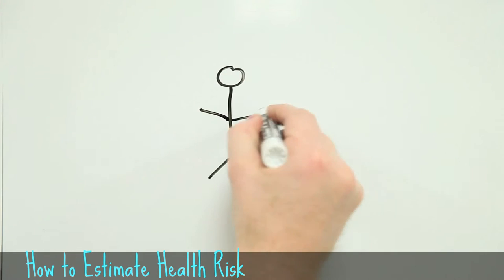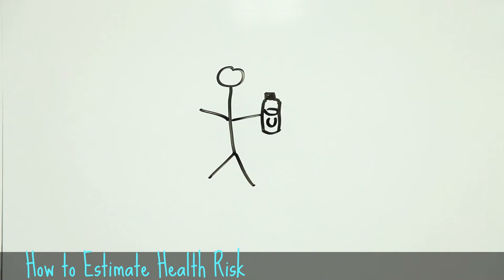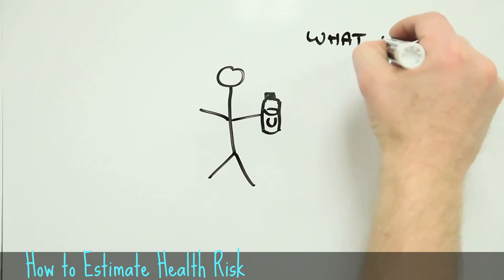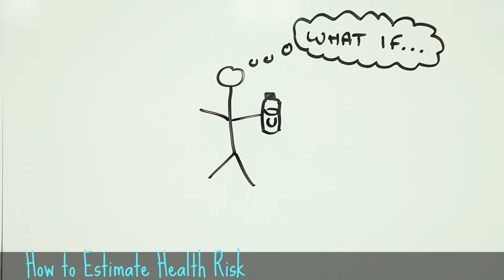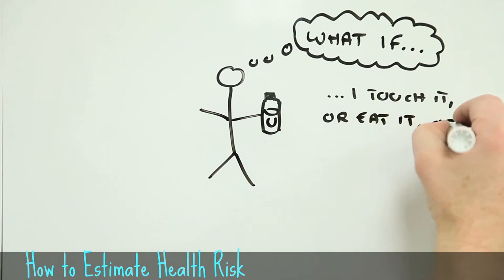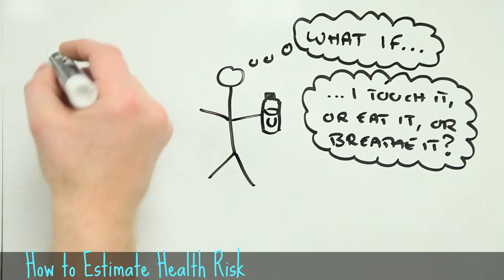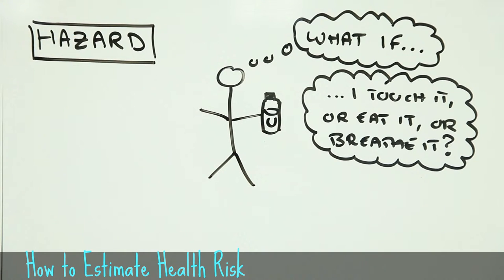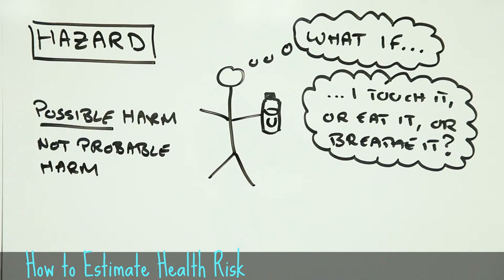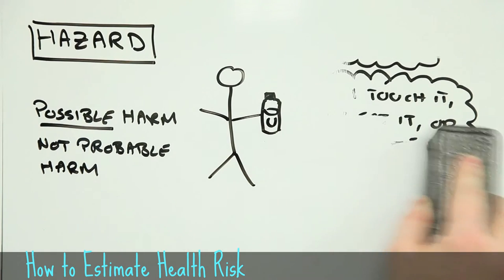Imagine, for instance, you're handling some mystery substance — let's call it Unobtanium. How would you go about working out what the risk is? The first step is to consider the potential for this Unobtanium to cause harm if it got into your body, and what harm it might cause once it gets there. This is the hazard it presents — it gives an idea of how nasty the stuff is if you come into contact with it. But hazard alone doesn't say anything about risk. It doesn't matter how hazardous the Unobtanium is: if you're not exposed to it, it cannot directly harm you.